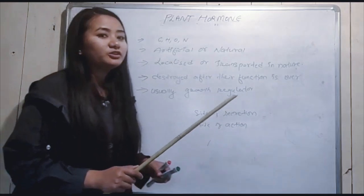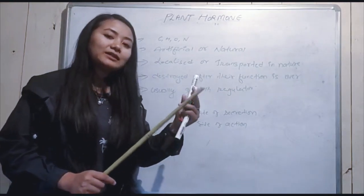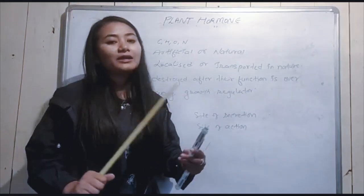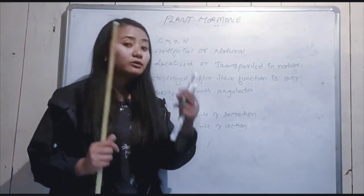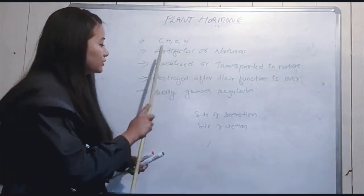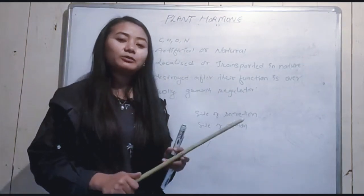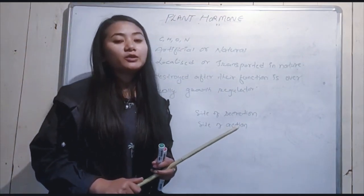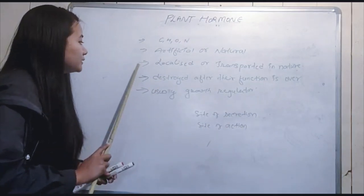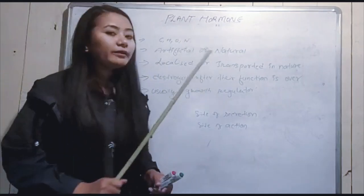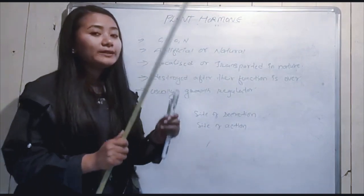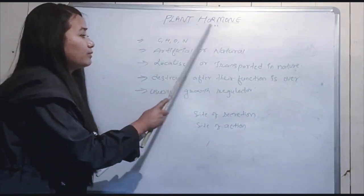Phytohormones are destroyed after their function is over. The next and very important characteristic: phytohormones are usually growth regulators. This is a key feature of plant hormones.